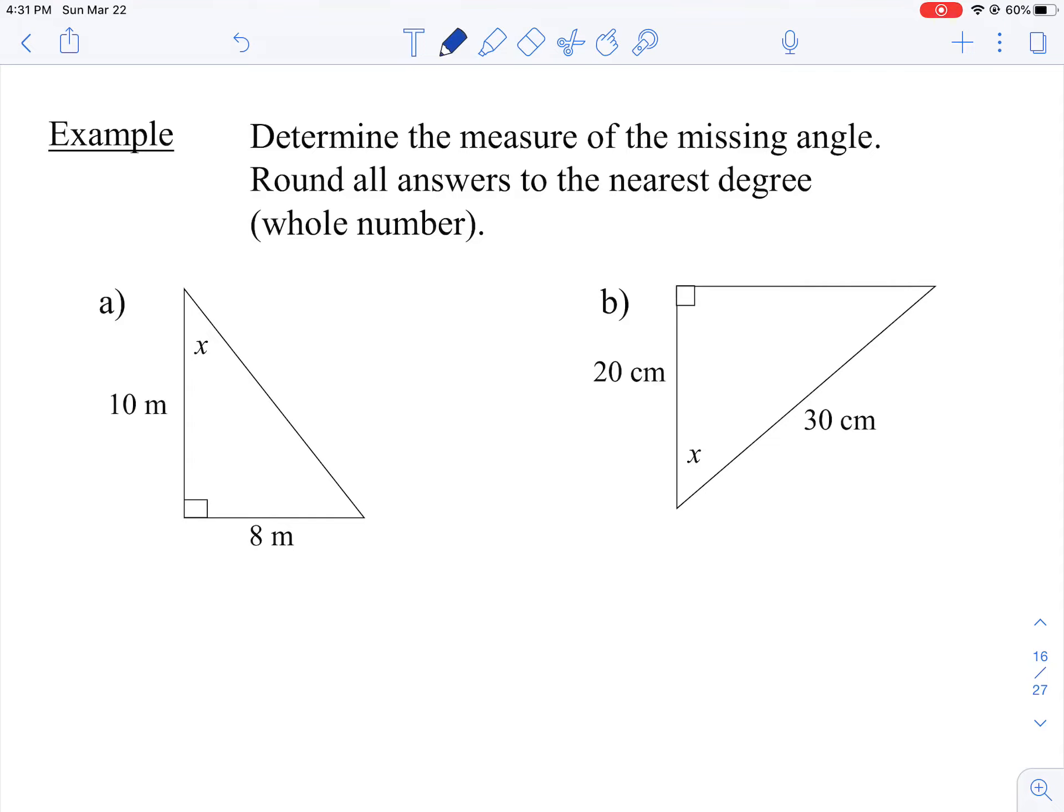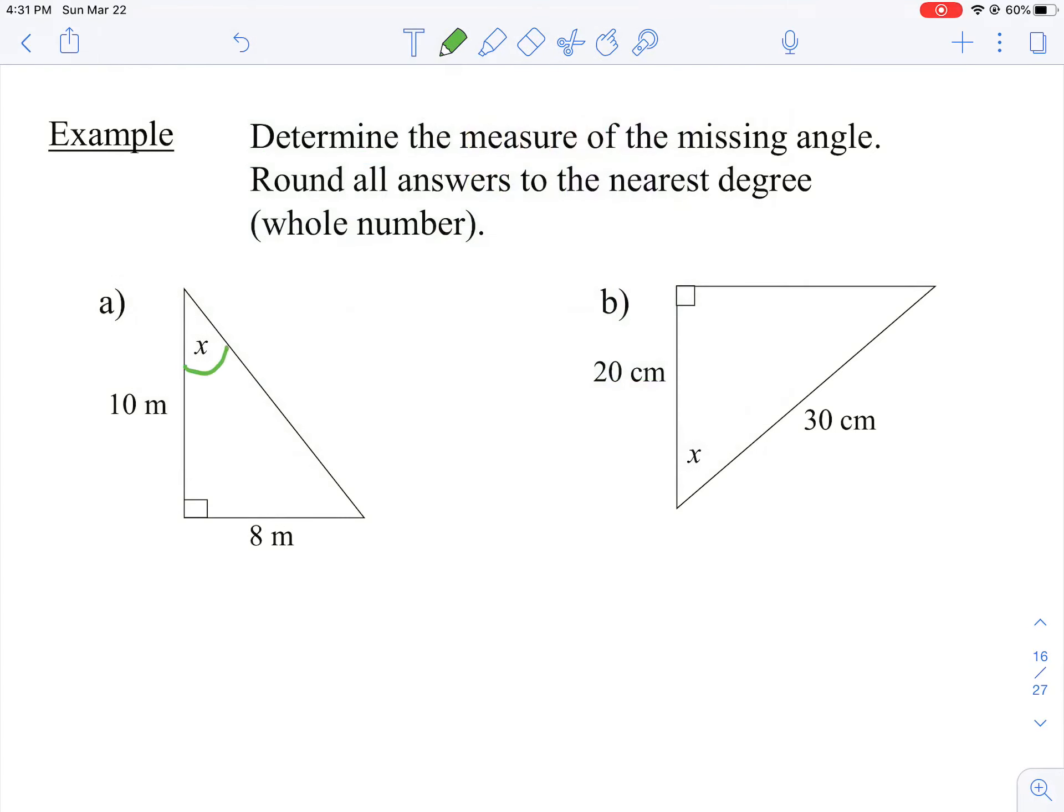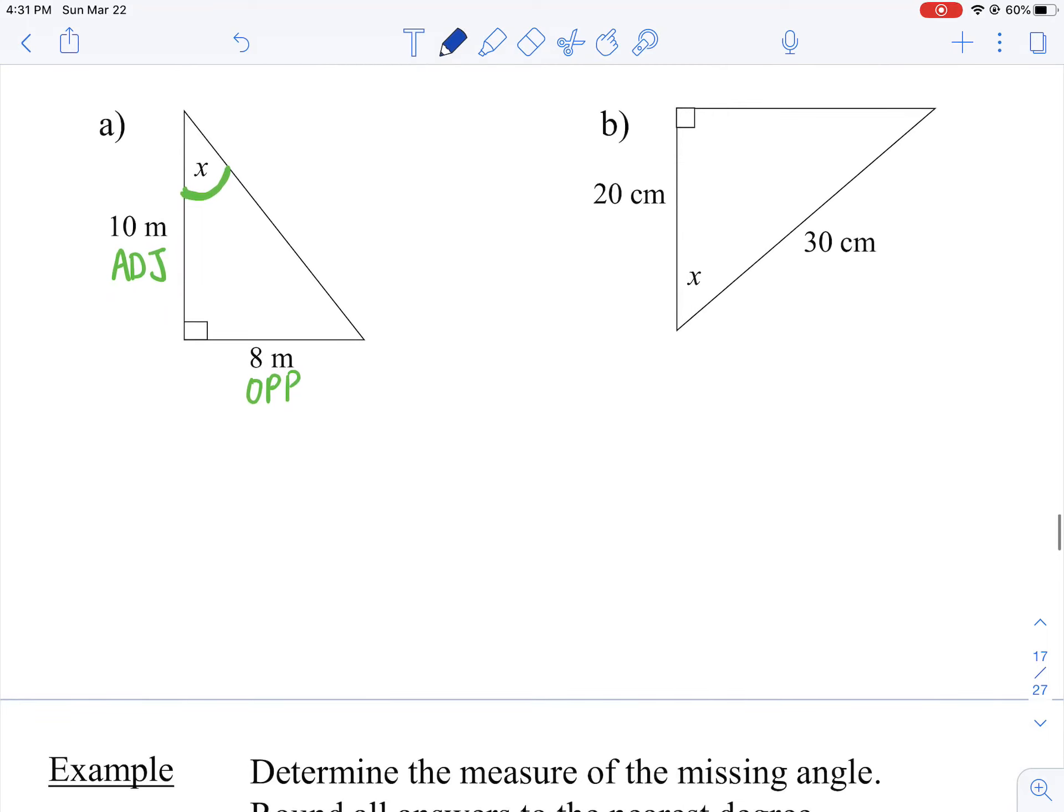Okay, so in part A, my reference angle is going to be X because that's what I'm looking for. 8 is opposite and then 10 is the adjacent. Don't label the hypotenuse because I'm not given the hypotenuse so it's useless to me at this point. So just label the two that you're given. All right, so O and A,